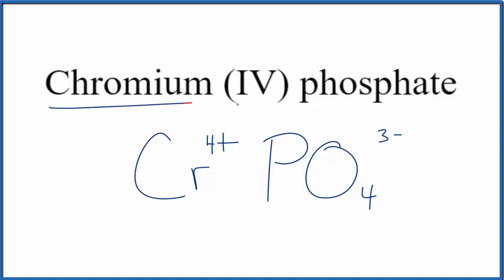So because chromium is a metal, it's a transition metal, and then phosphate, that's a group of nonmetals, a polyatomic ion, we have an ionic compound here.